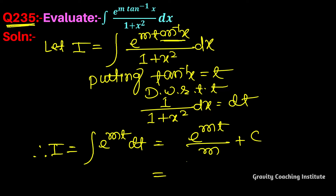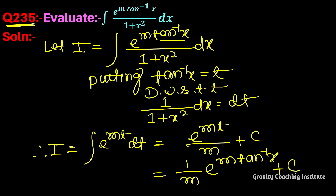Therefore I equals (1/m) · e to the power mt. Substituting back the value of t as tan⁻¹x, the final answer is (1/m) · e to the power m·tan⁻¹x plus c.